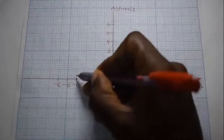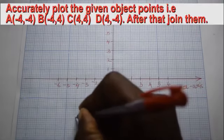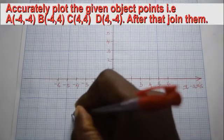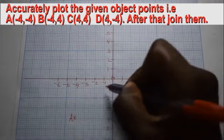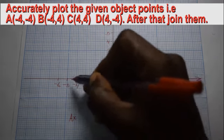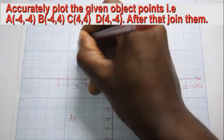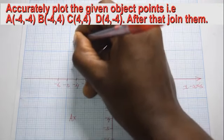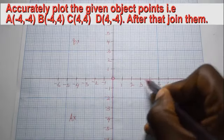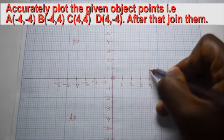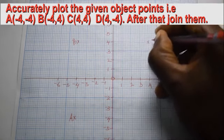Accurately plot the object coordinates: A with negative 4, 4; B with negative 4, positive 4; C with 4, 4; and D with 4, negative 4.